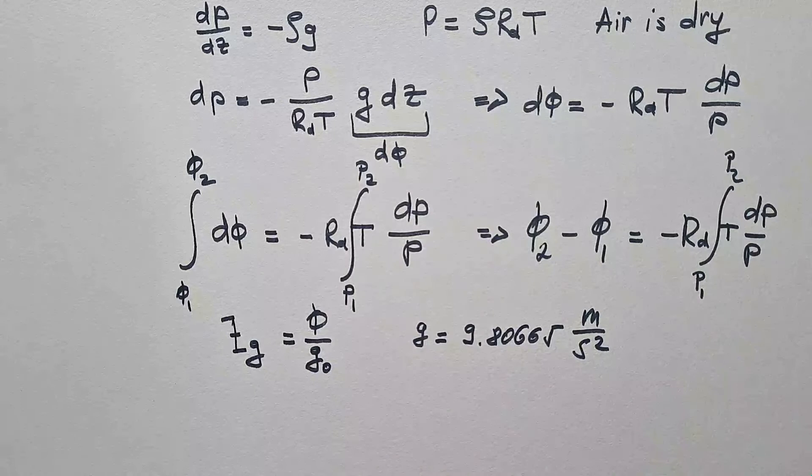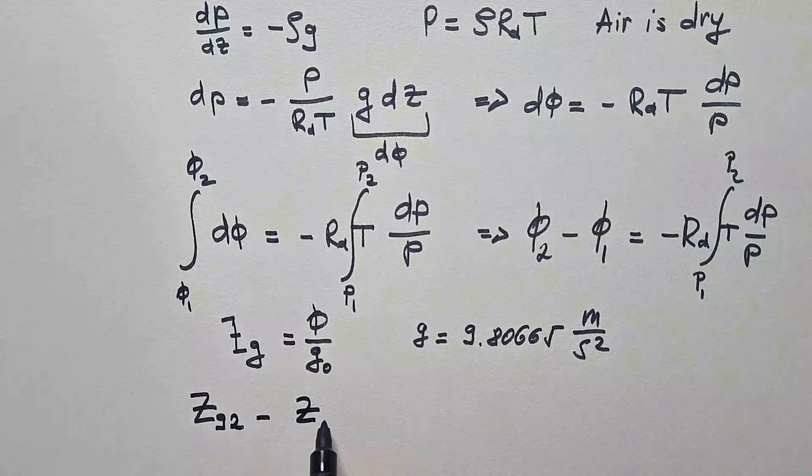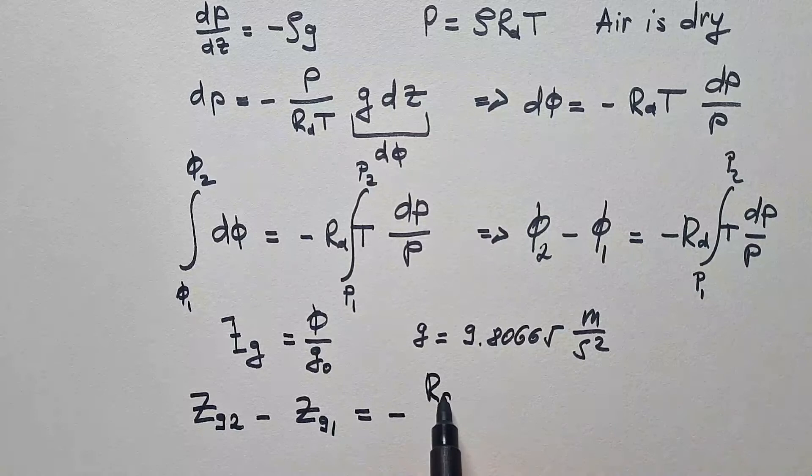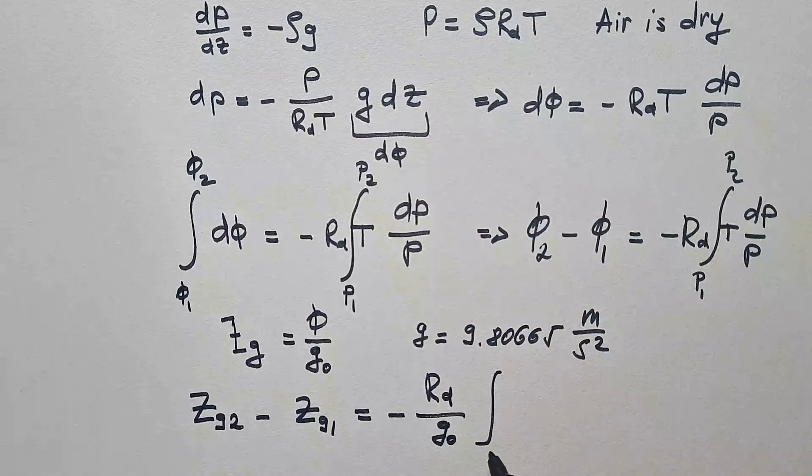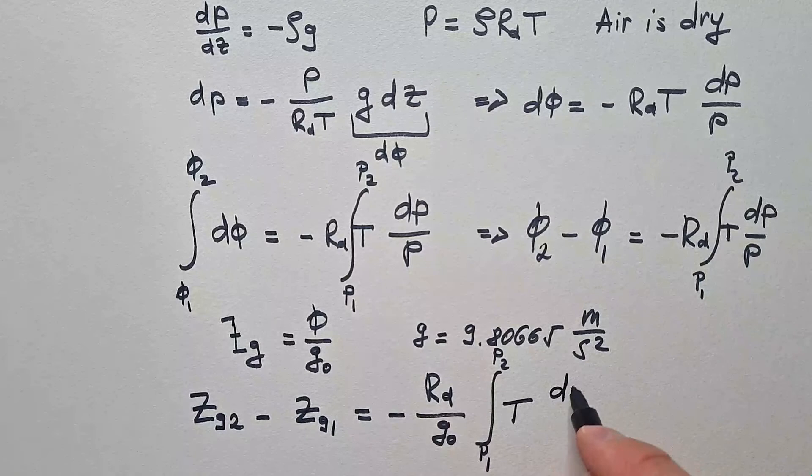Zg2 minus Zg1 is equal minus Rd divided by g0 integral P1 P2 T dp over p, and this is hypsometric equation using geopotential height.